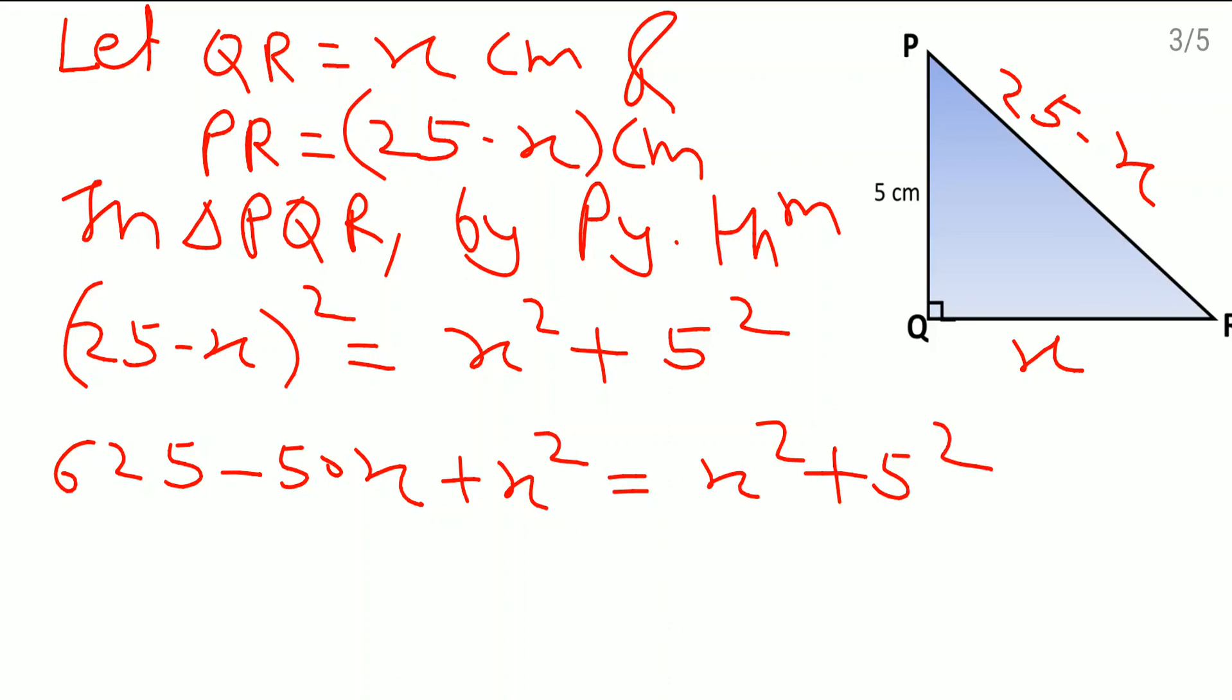Just observe both the sides. This X square and X square will get cancelled because both the side the same variable is there. Now this minus 50 I will keep as it is and then this 625 I will send that side. So it will get subtracted over there. 5 square means that 25 and minus 625.